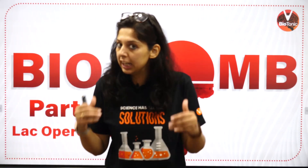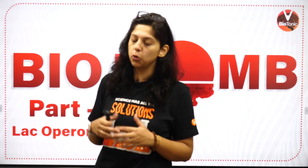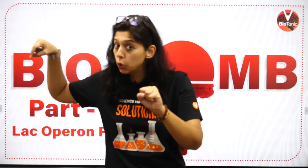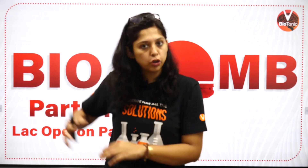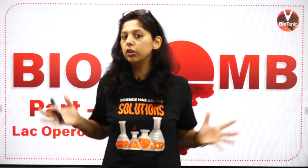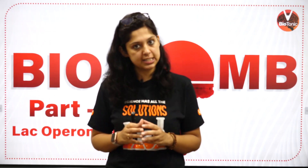One bacteria is E. coli. In E. coli bacteria, Jacob and Monod found the way how the bacteria utilizes lactose in the absence of glucose and breaks lactose. It makes something which is known as glucose and galactose and utilizes it. All of that we have already seen in the previous class.